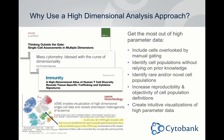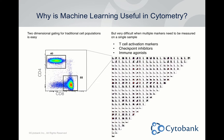So why use a high-dimensional analysis approach? There are many cytometers now that allow you to look at ten or more colors, and when you're looking at that much data it can be difficult to wrap your head around all of the different channels at once. Using machine learning algorithms can help see all the differences between your populations much more effectively.